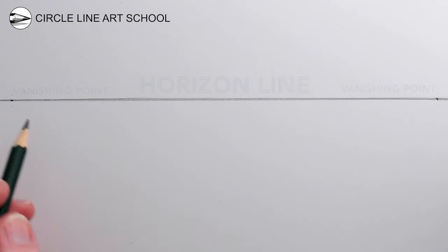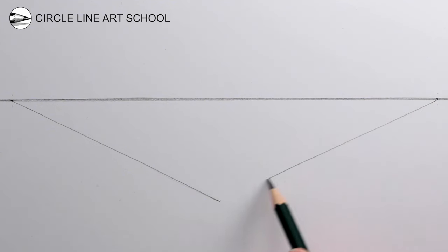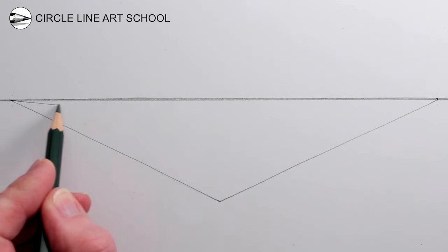Next, draw two lines from the vanishing point towards the bottom center of your drawing, and then draw two more lines from each vanishing point so that you create a square in two-point perspective.